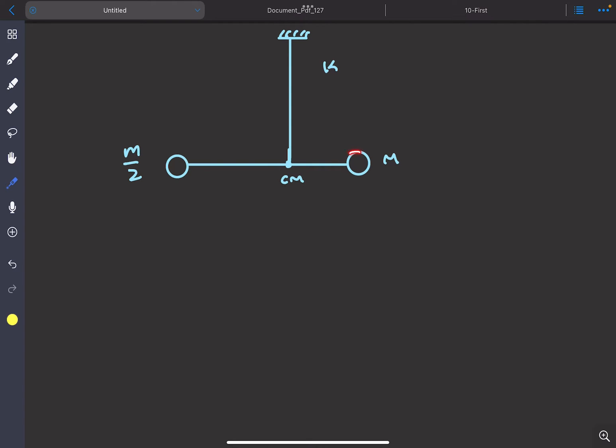The question is: given that two masses m and m/2 are attached together with the help of a light rod and they are suspended by a light string about its center of mass, and it's given that the torsional constant of this string is k.